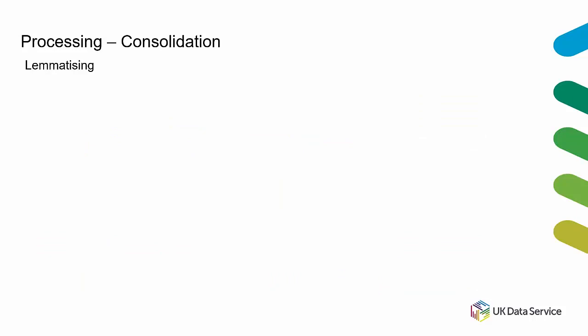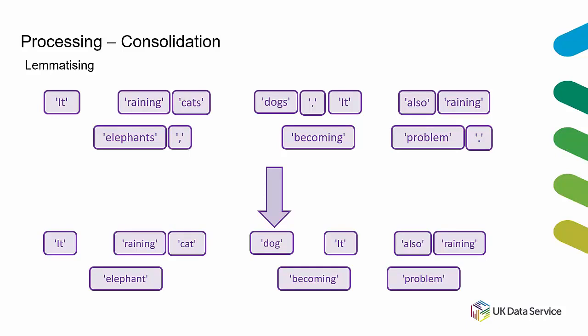A more sophisticated option for consolidation is lemmatizing. Lemmatizing reduces nouns to singular noun forms and verbs to root verb forms, but keeps nouns and verbs separate. However, unless a part of speech is given to the lemmatizing process, it assumes everything is a noun and effectively becomes just a de-pluralizer. So we might still get 'reining' and 'becoming' instead of their root verb forms, which may or may not be acceptable depending on your goals.